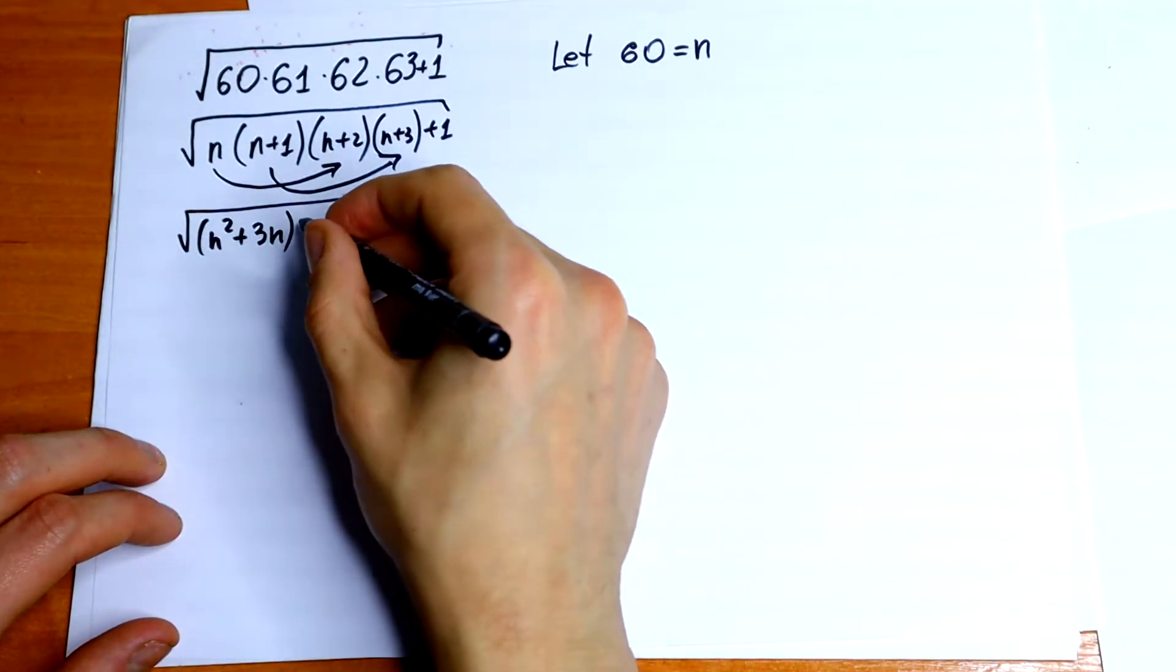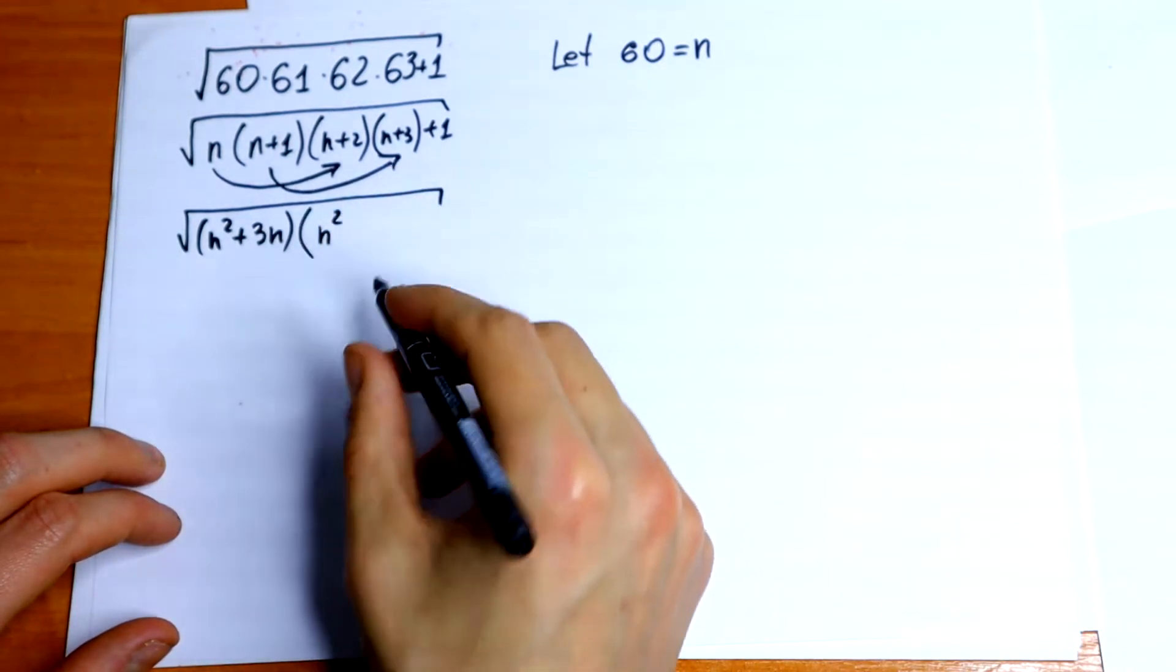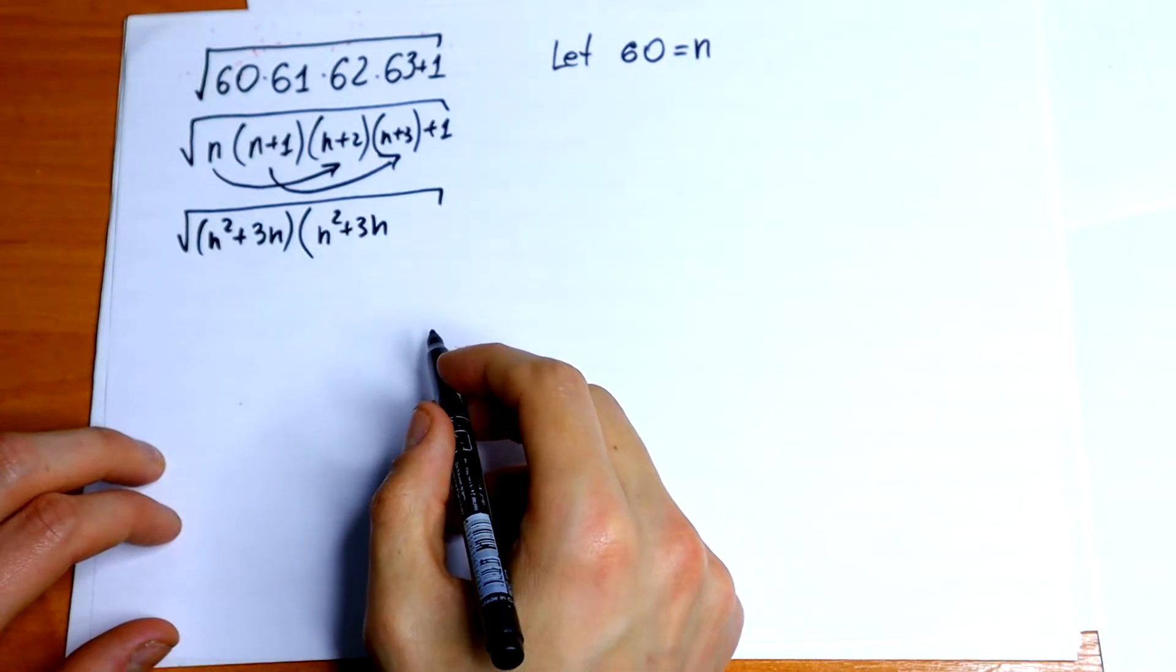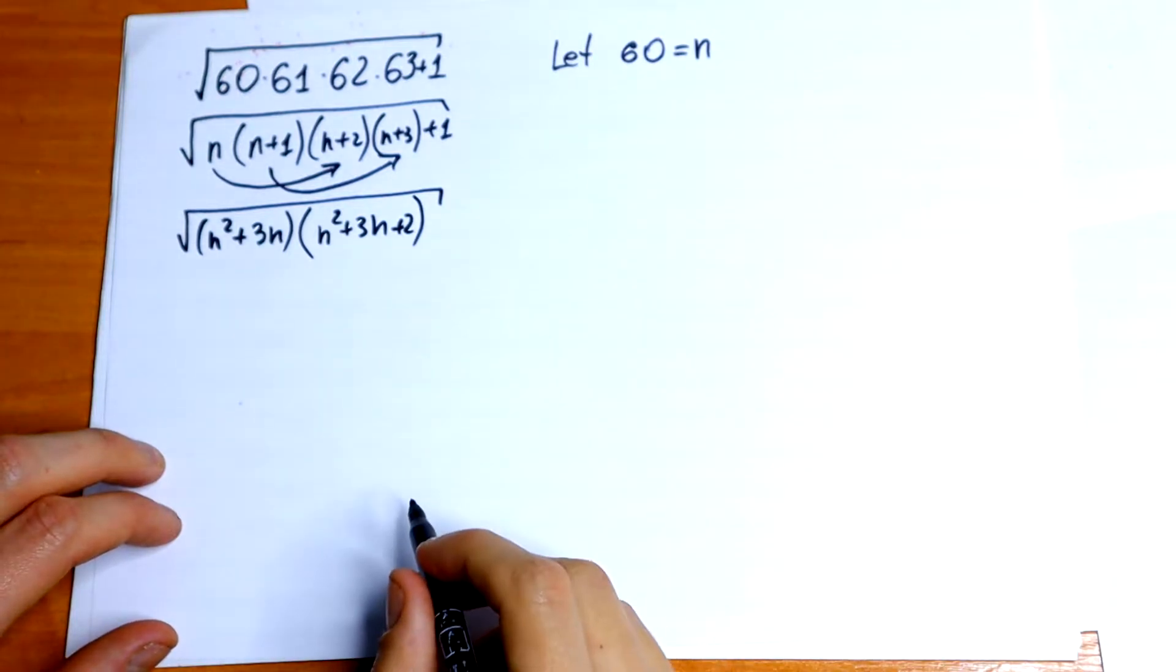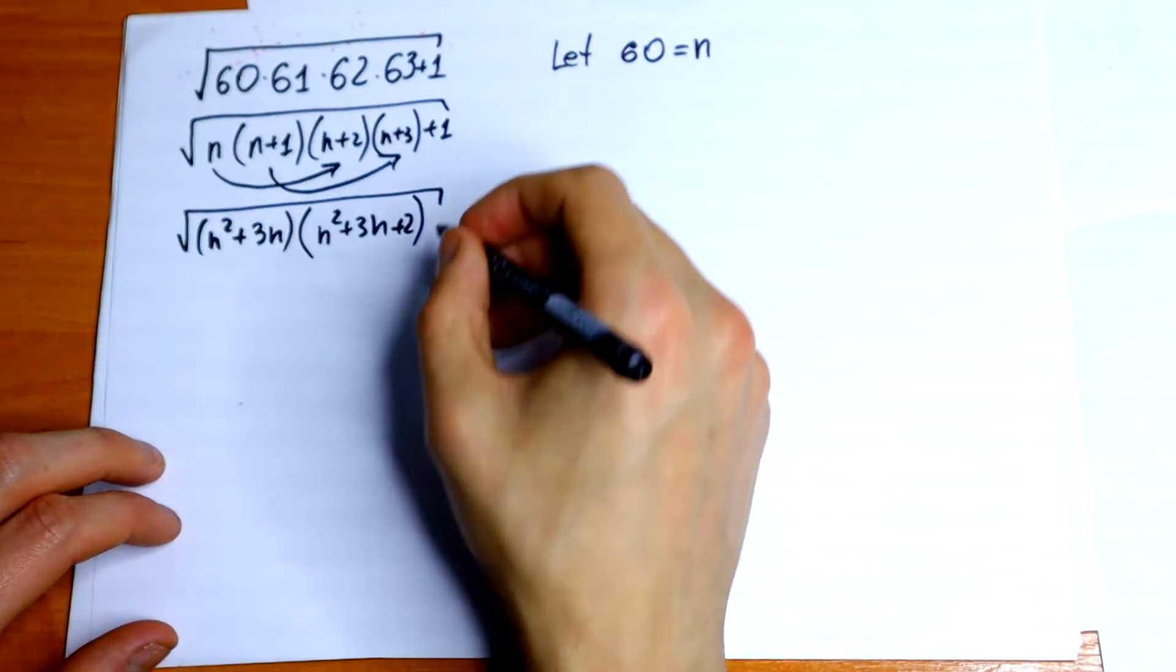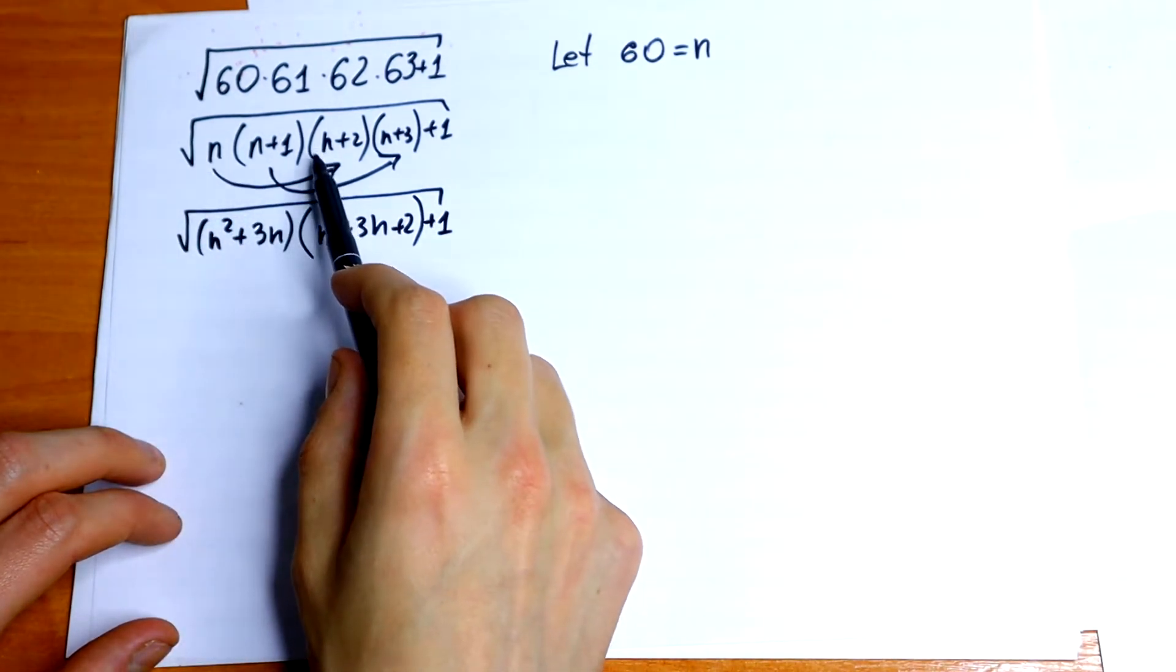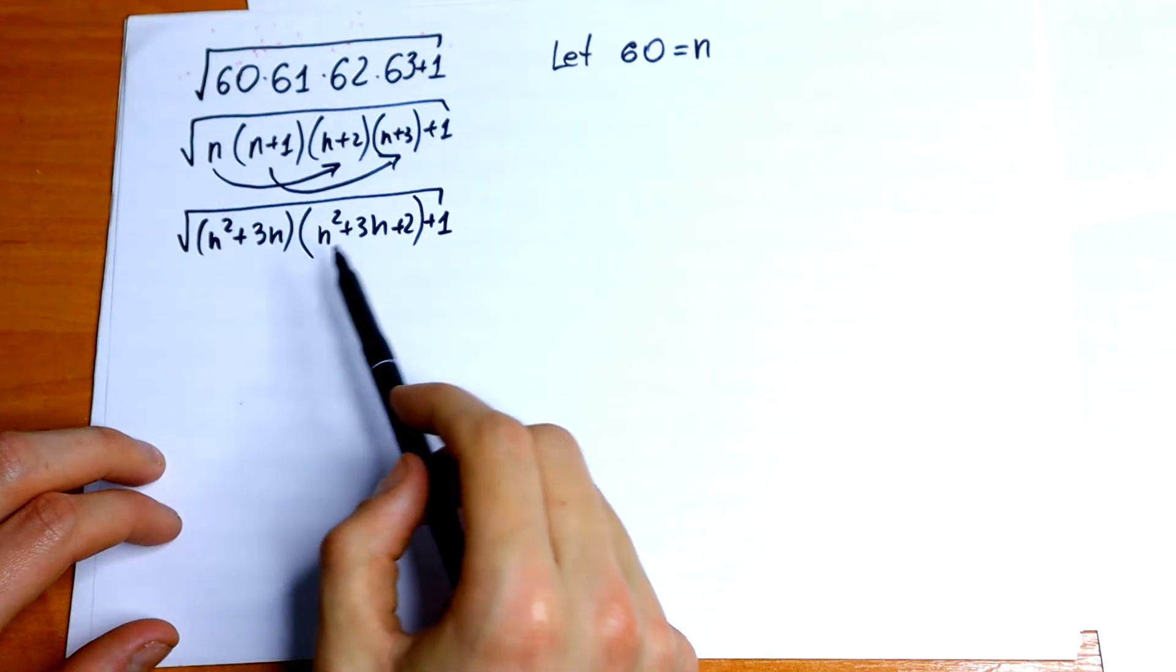And next parenthesis, n square plus 3n and plus 2, and plus 1. Just multiply this n by this parenthesis and this n plus 1 by this parenthesis. So we will get something like that.